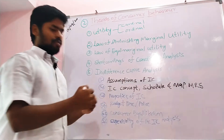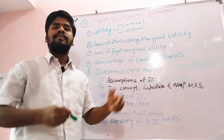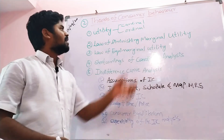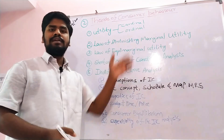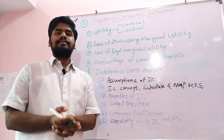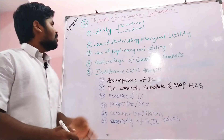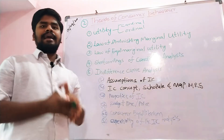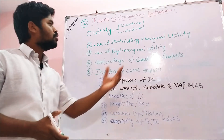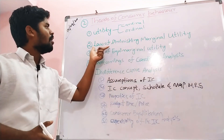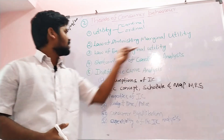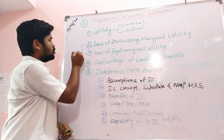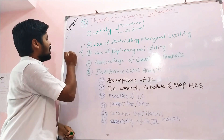The cardinal utility approach was developed by Alfred Marshall. The ordinal utility approach was developed by Hicks and Allen. Based on cardinal utility analysis, there are two theories: the Law of Diminishing Marginal Utility and the Law of Equi-Marginal Utility. These two theories are part of the cardinal approach.